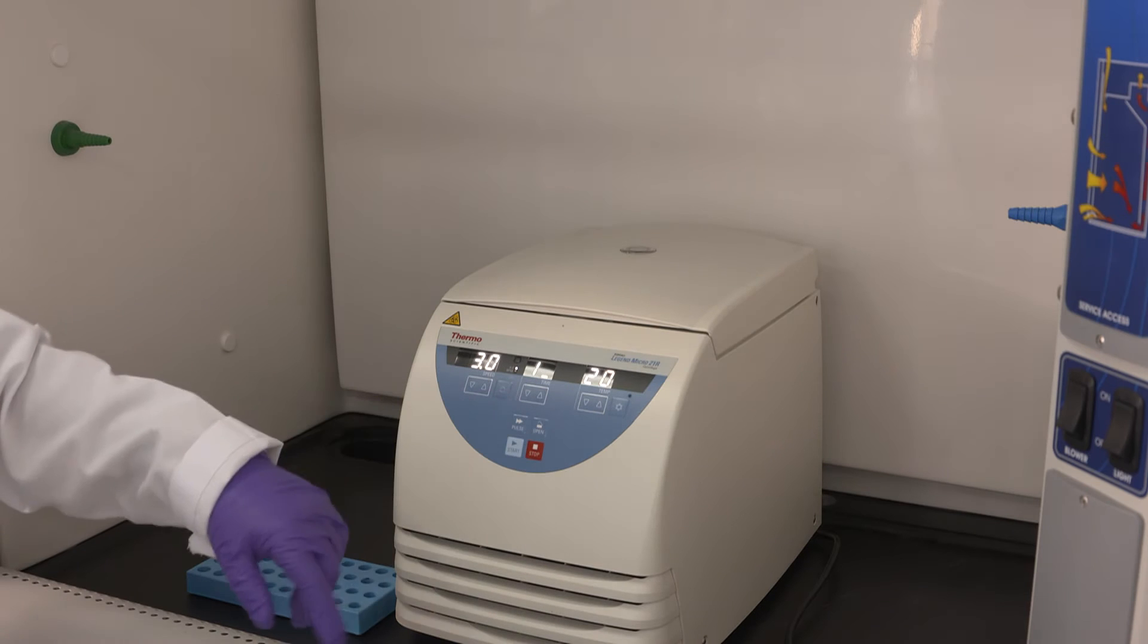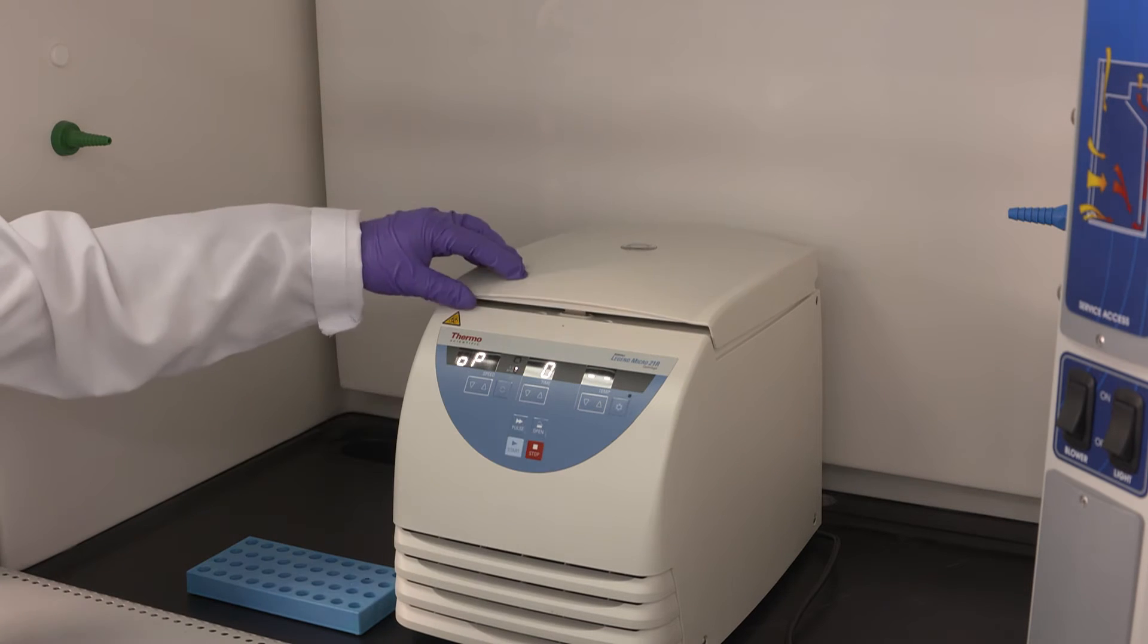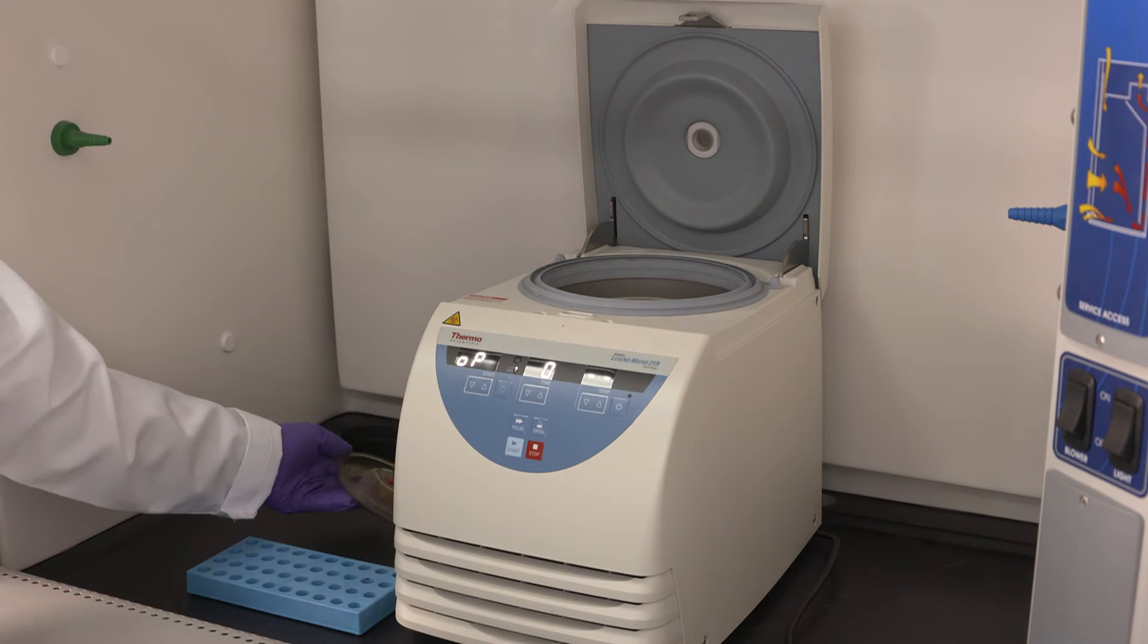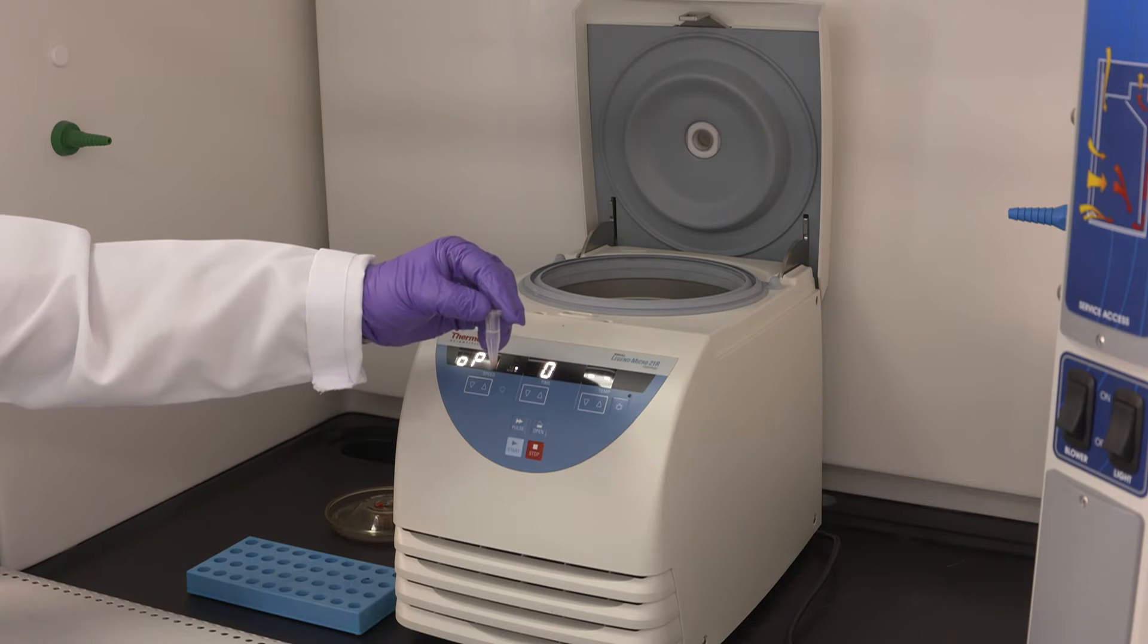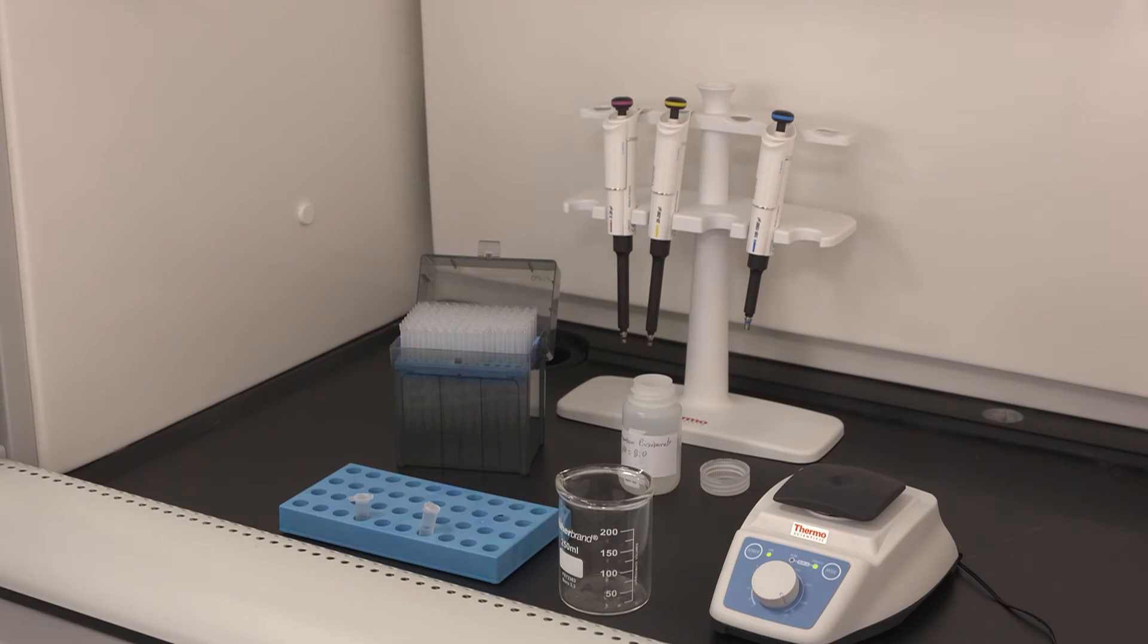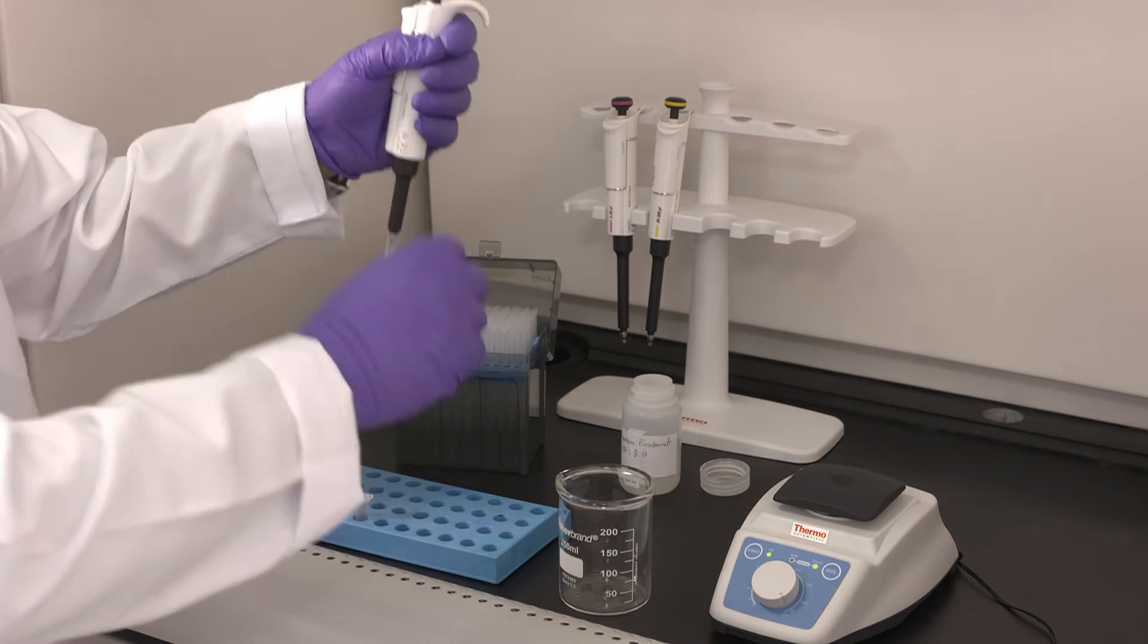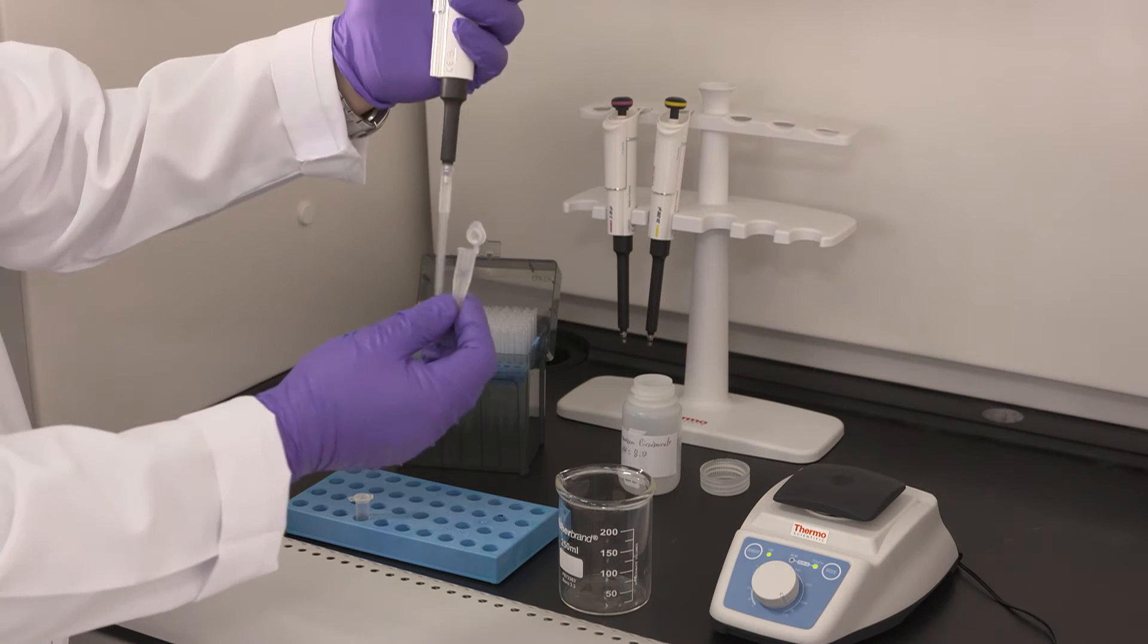Following 10 minutes centrifugation at 3000 g, we will observe the formation of a protein pellet and a liquid phase. We can observe the protein at the bottom of the tube and on the side of the tube, and we can clearly identify the liquid phase. Now we will remove the aqueous phase that contains acetone and keep the proteins.